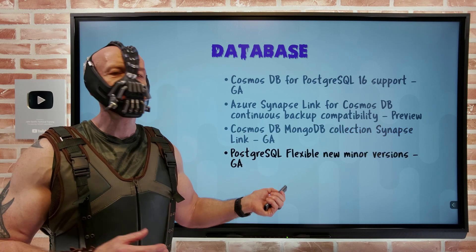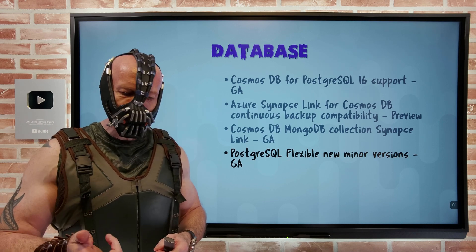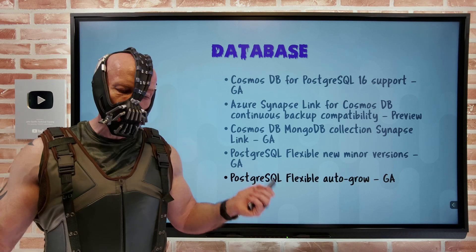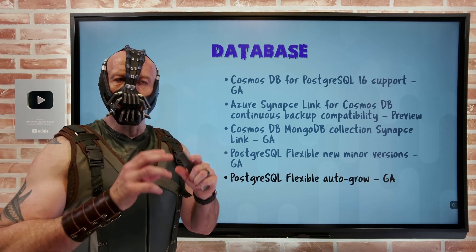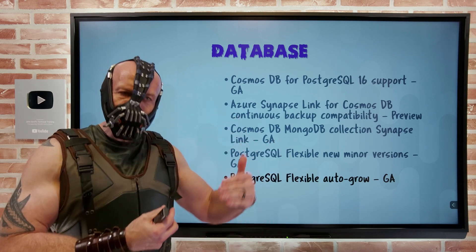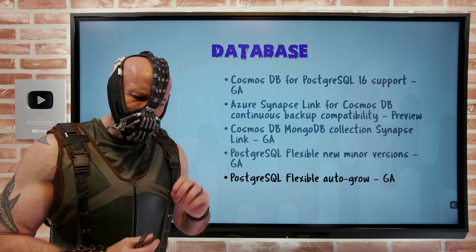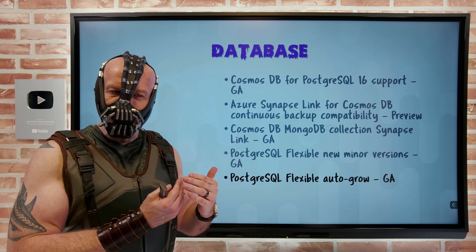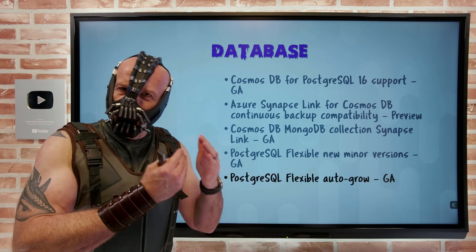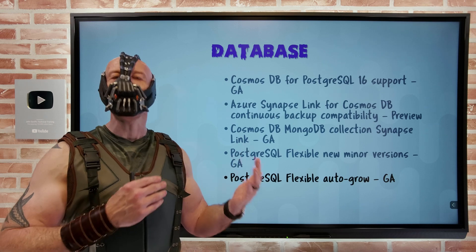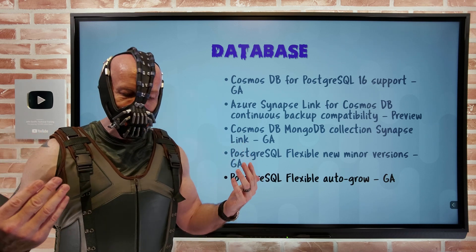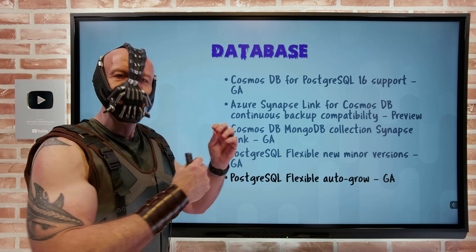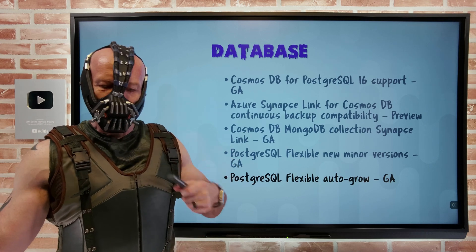PostgreSQL Flexible has new minor version support: 15.4, 14.9, 13.12, 12.16, and 11.21. PostgreSQL Flexible auto-grow has also gone GA, meaning I no longer need to worry about provisioned storage — it will automatically increase storage when I get within a certain threshold. If I have more than one TB of provisioned space, it activates if space falls below 10% or 64 GB. If less than one TB, the threshold is 64 GB or 20%, whichever is smaller. They also have online disk scaling, eliminating most server restarts — though crossing the four TB boundary does require a manual scaling operation because it changes the underlying disk type.